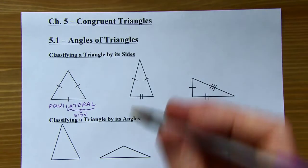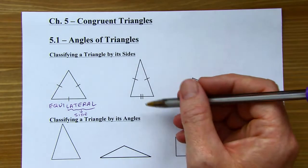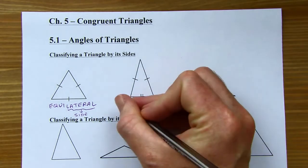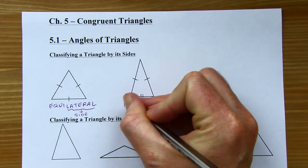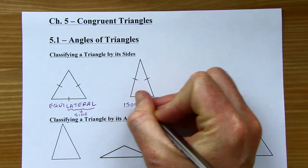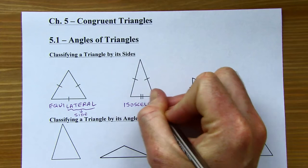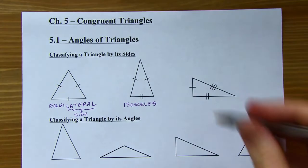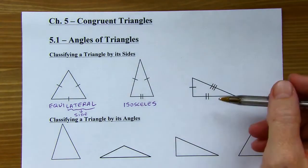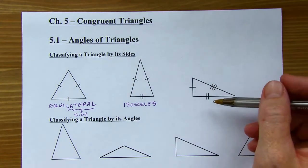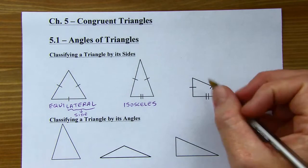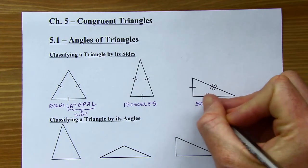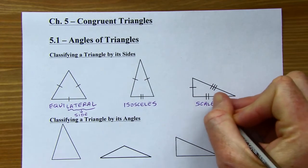When two of the three sides are congruent, then that is an isosceles triangle. And when all three sides are different lengths — none of them are congruent — that is called a scalene triangle.